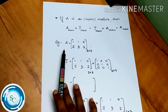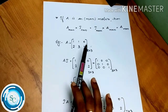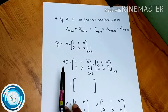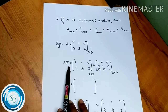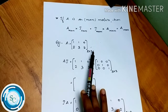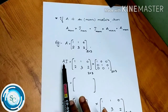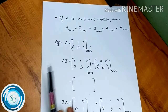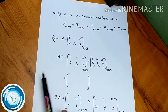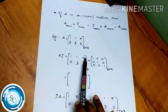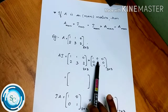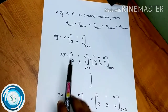Let's look at an example. Let A be the 2×3 matrix: 1, 1, 0, 2, 3, 2. Now let's multiply A by the 3×3 identity matrix.